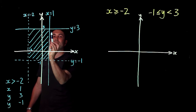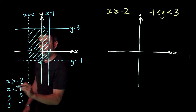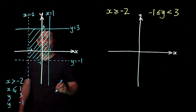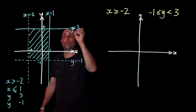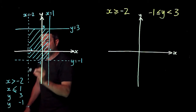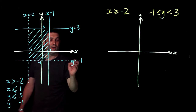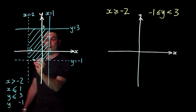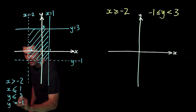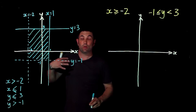Because that x equals one line is solid, we include equal to as well. For y equals three, the shaded bit is below the line, so that's less than, and it's a solid line so it's less than or equal to. For y equals minus one, the shaded bit is above the line, so that's greater than, and because it's dotted it's just greater than.